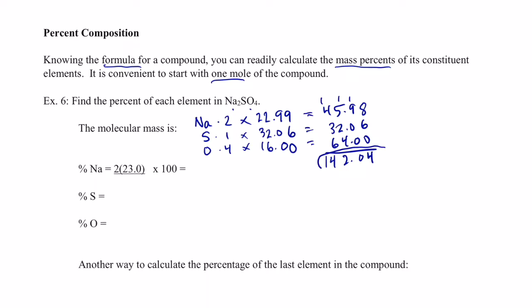Of this 142.04 grams per mole, we want to find the percentage that is sodium, sulfur, and oxygen. To find the percentage of sodium, we take the mass of sodium — I rounded to the nearest tenth, so I'm only getting three significant figures — and divide by 142.04, then multiply by 100. So 2 times 23 divided by 142.04 is .32385, times 100, rounded to three sig figs, gives us 32.4% sodium.